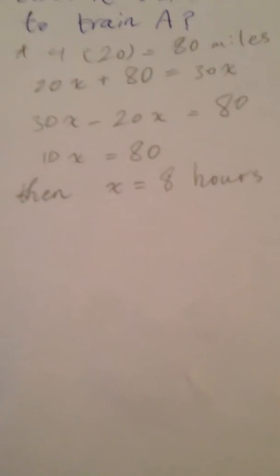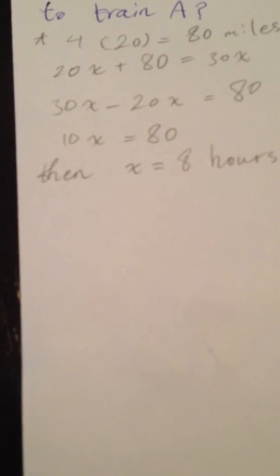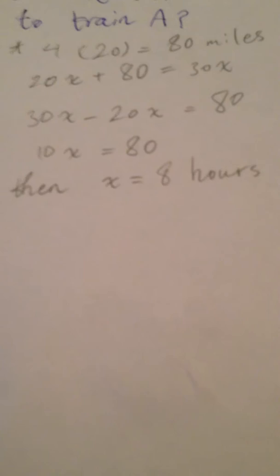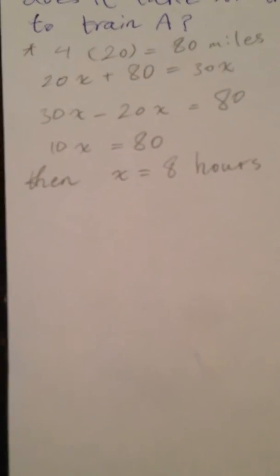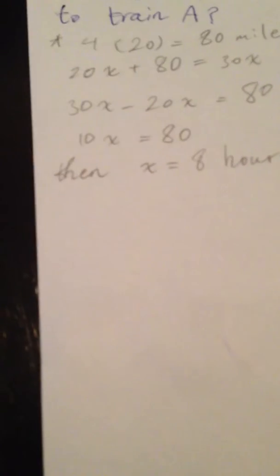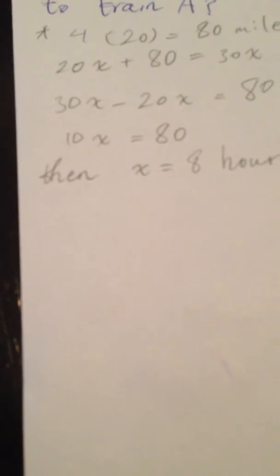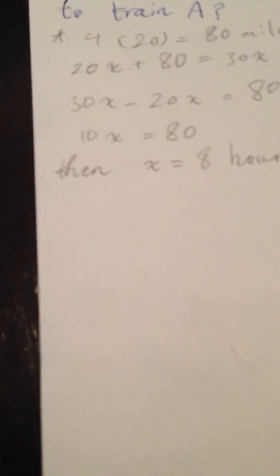Now we should consider the four hours before train B leaves by multiplying the 20 miles per hour by four, so we have 80 miles between train A and train B before it starts traveling. So 20x plus 80 equals 30x, where x is our time for train B to catch up with train A.